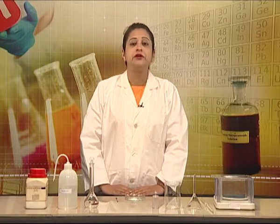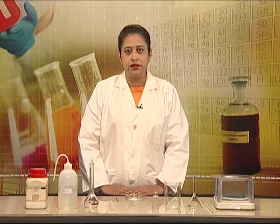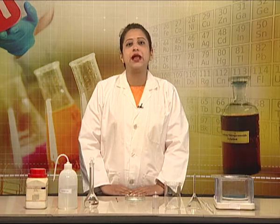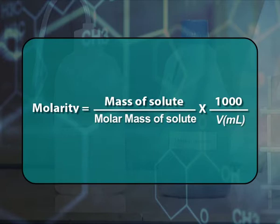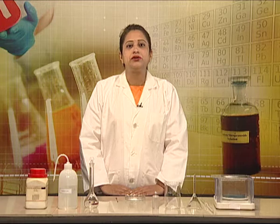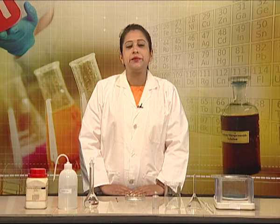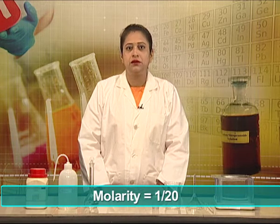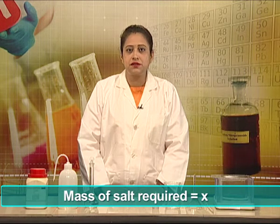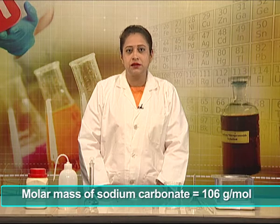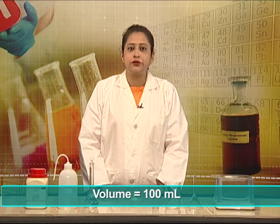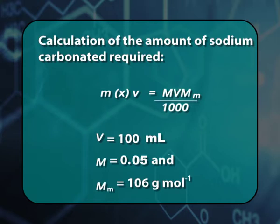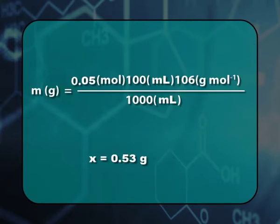First and foremost, we need to know how much salt will be required for making this solution. By using the formula of molarity — molarity equals mass of solute required divided by molar mass of solute, multiplied by 1000 divided by volume in milliliters — we can find the amount of salt required. Since we are preparing a 0.05 molar solution of sodium carbonate, we substitute 1/20 for molarity, x for mass, 106 for the molar mass of sodium carbonate, and 100 ml for volume. On calculation, x comes out to be 0.53 gram.